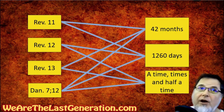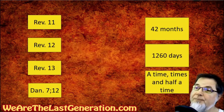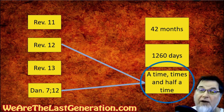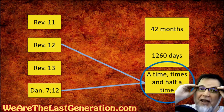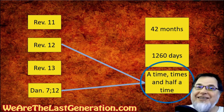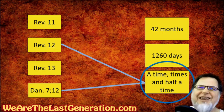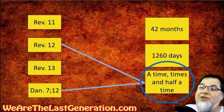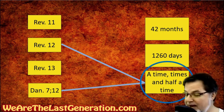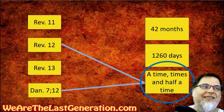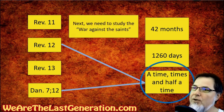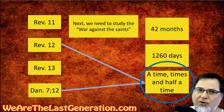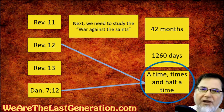So far we've connected a time, times, and half a time in Daniel to Revelation chapter 12 — that's all we've done. Nobody should be confused at this point. I'm not going to go fast; I'm going to go slow. I want you guys begging me to move on before I do. This is very complicated. Now, next we need to study the war against the saints — all we've seen so far is the time, times, and half a time.